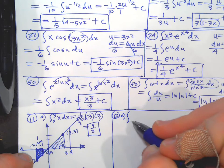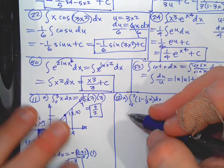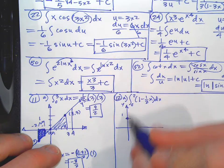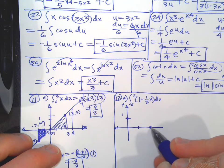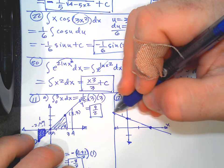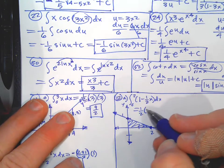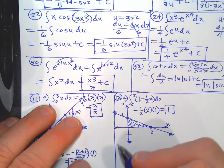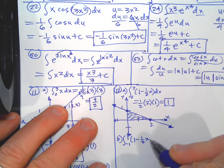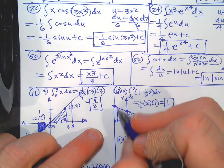Problem 12a: integrate from 0 to 2 of (1 - one-half x) dx. Graph it — y-intercept at 1, slope of negative one-half. From 0 to 2 it's a triangle: one-half times base 2 times height 1 equals 1. Part b integrates from -1 to 1 of the same line. That's a trapezoid — the bases are obtained by plugging in: f(-1) = 3/2 and f(1) = 1/2. Average of the bases times height of 2: the twos cancel, giving 4/2 equals 2.